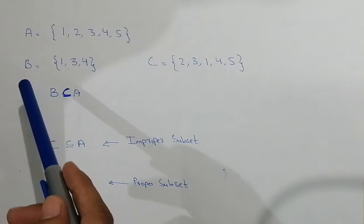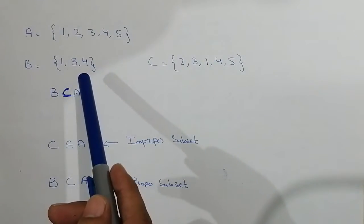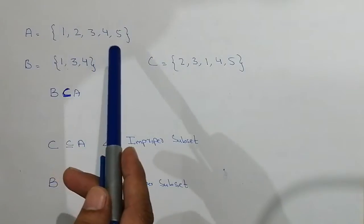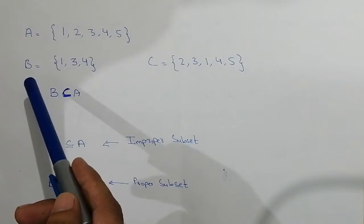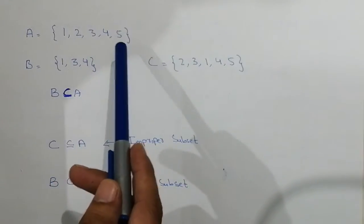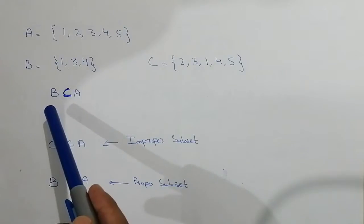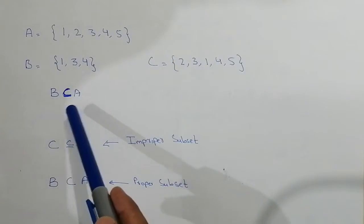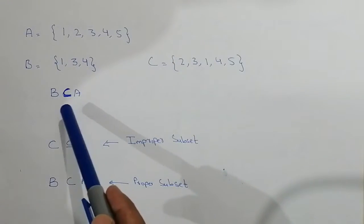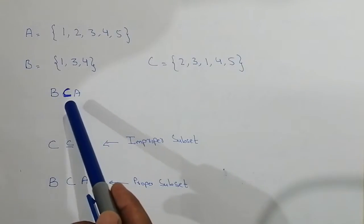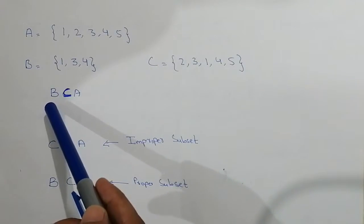Now if you look over here, the elements present in set B are present in set A. So we can say that B is a subset of A. We can write it like this: B is a subset of set A, or A is the superset of set B.